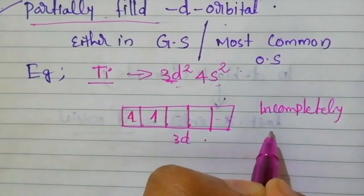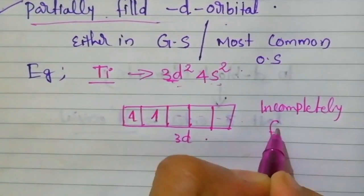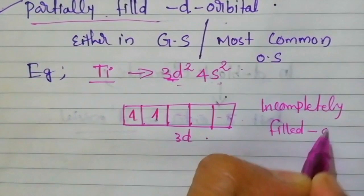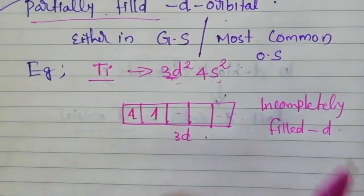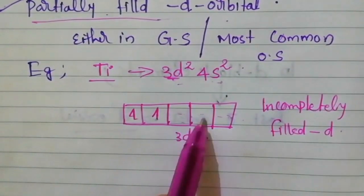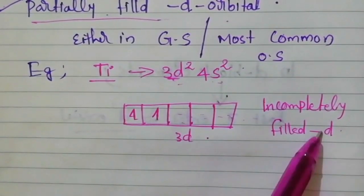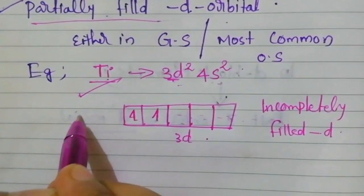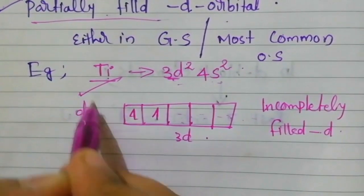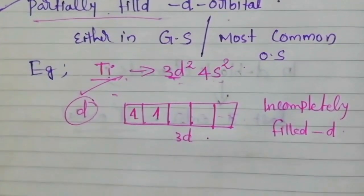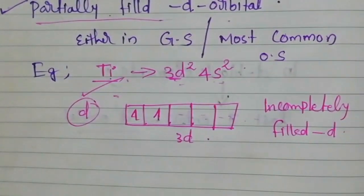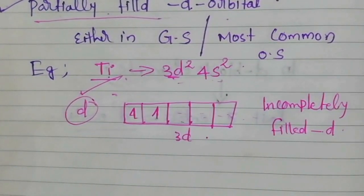Sometimes we may think the element is a transition element simply because it is placed in groups 3 to 12. But position is not the criteria to be a transition element. The main criteria is that it must contain a partially filled D orbital.